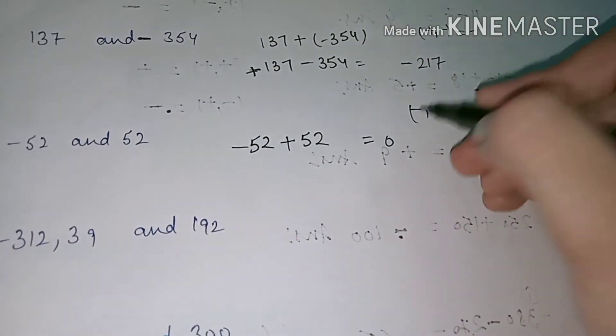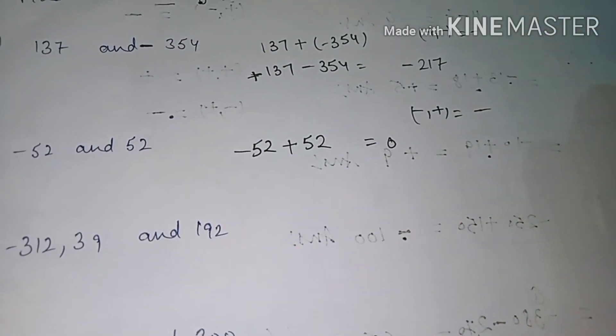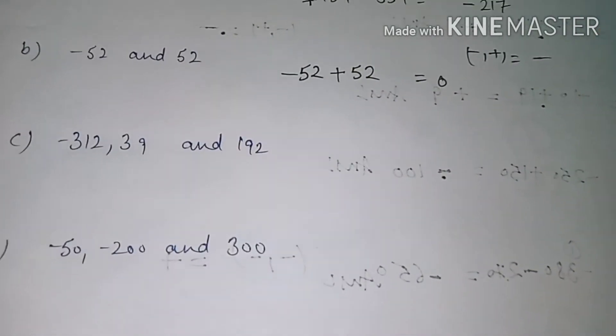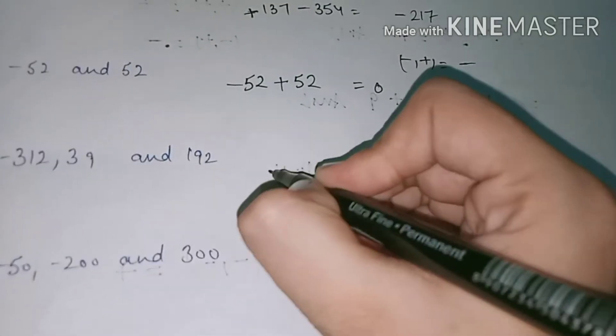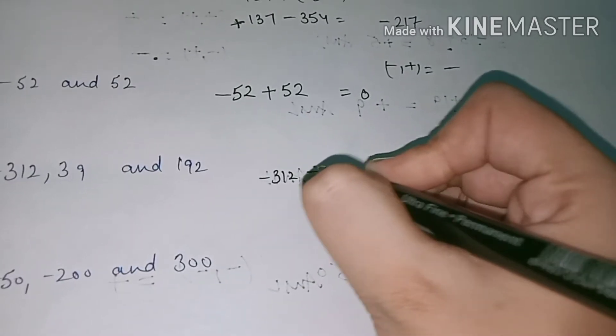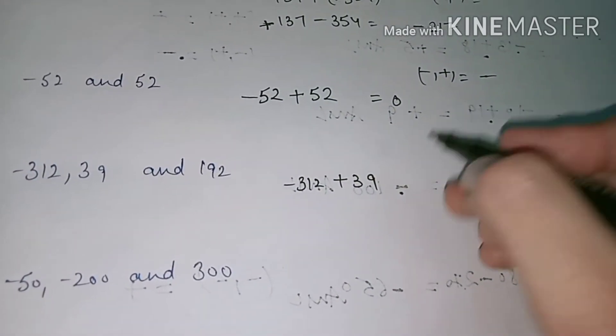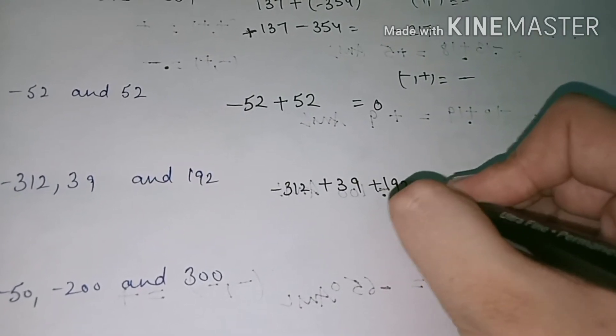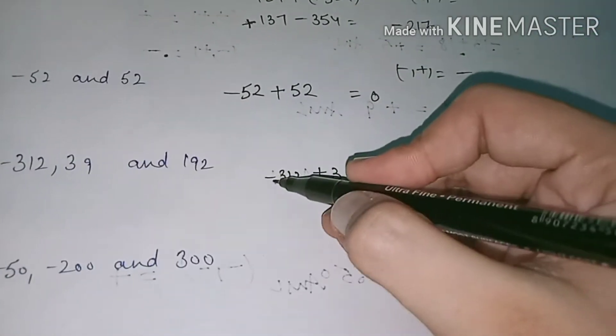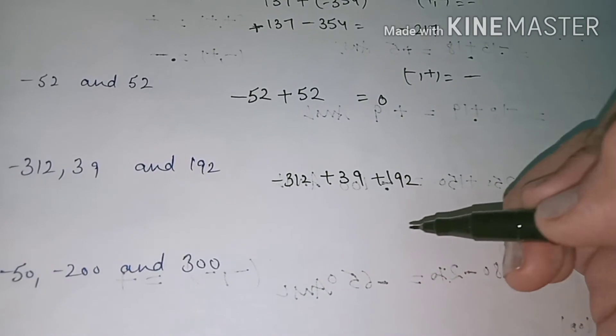Minus 312 plus 39, add plus 192. Now minus and plus, minus plus, minus plus, minus plus.